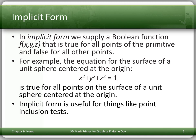Implicit form: we supply a boolean function f. We're mostly in three dimensions here, so this will be f(x, y, z). That function is true for all points of the primitive and false for all other points. So if I have a point x, y, z and I want to know if it's on or in the primitive, I call f(x, y, z) and it returns true if it is.